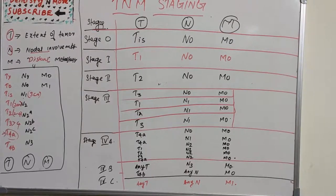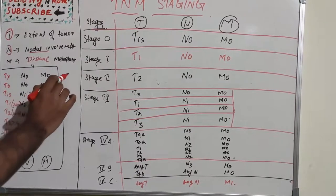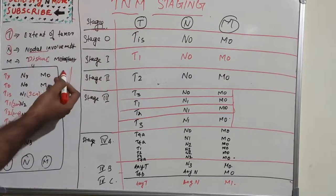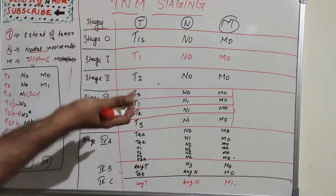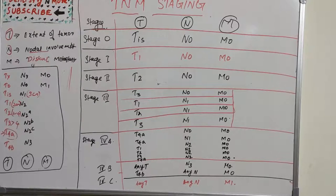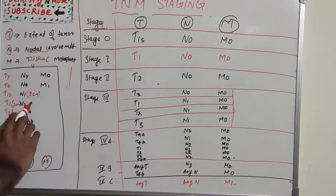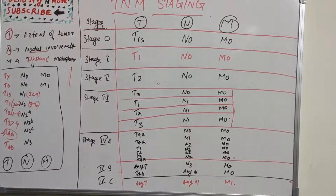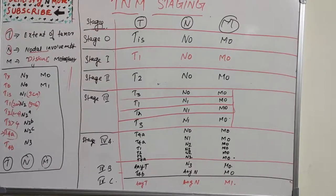N1 is ipsilateral lymph nodes—ipsilateral means only on one side, not contralateral, either left or right side. N2 is metastasis in a single ipsilateral lymph node with dimension more than 3mm but not more than 6cm, or multiple ipsilateral lymph nodes, or bilateral or contralateral lymph nodes.